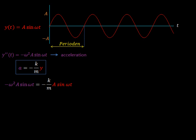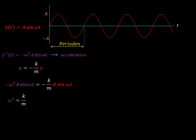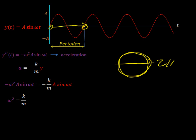Now we have something that looks complicated, but we know from basic mathematics that if you have a product with the same term on each side, you can divide both sides by it and it cleans up nicely. So we arrive at omega squared — the angular velocity squared — equal to the spring constant k divided by the mass m. We know that one period is one complete oscillation, and if we think of the circle from the previous video, going all the way around is 2 pi.